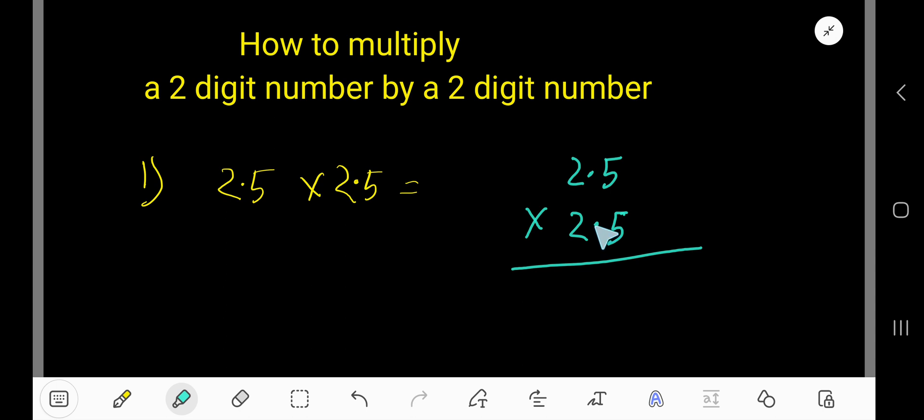Start with this 5. 5 times 5 is 25, right? Write 5 here and carry 2 to the next column. Then 5 times 2 is 10, and add this 2 to get 12. So write 2 here, then 1. Don't think about the decimal now.